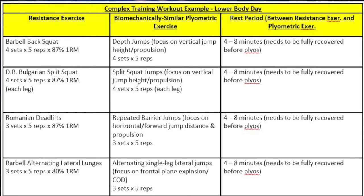They are not going to perform all four sets before conducting the plyometric exercise. They'll perform one set of back squats for five reps, then rest four to eight minutes so they're fully recovered and not fatigued before starting the plyometric exercise. Then they'll do a set of depth jumps, focusing on vertical jump height and explosion — putting force into the ground, with ground reaction force propelling them upward. After one set of five depth jump reps, they rest and go back to their second set of back squats, repeating this pattern.